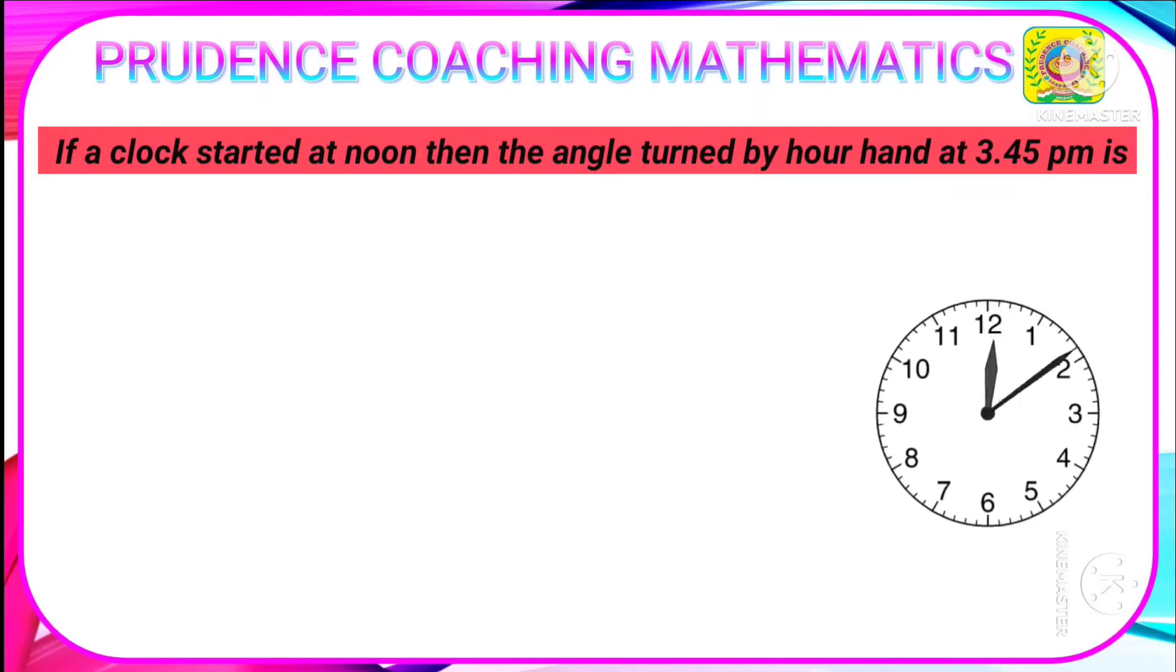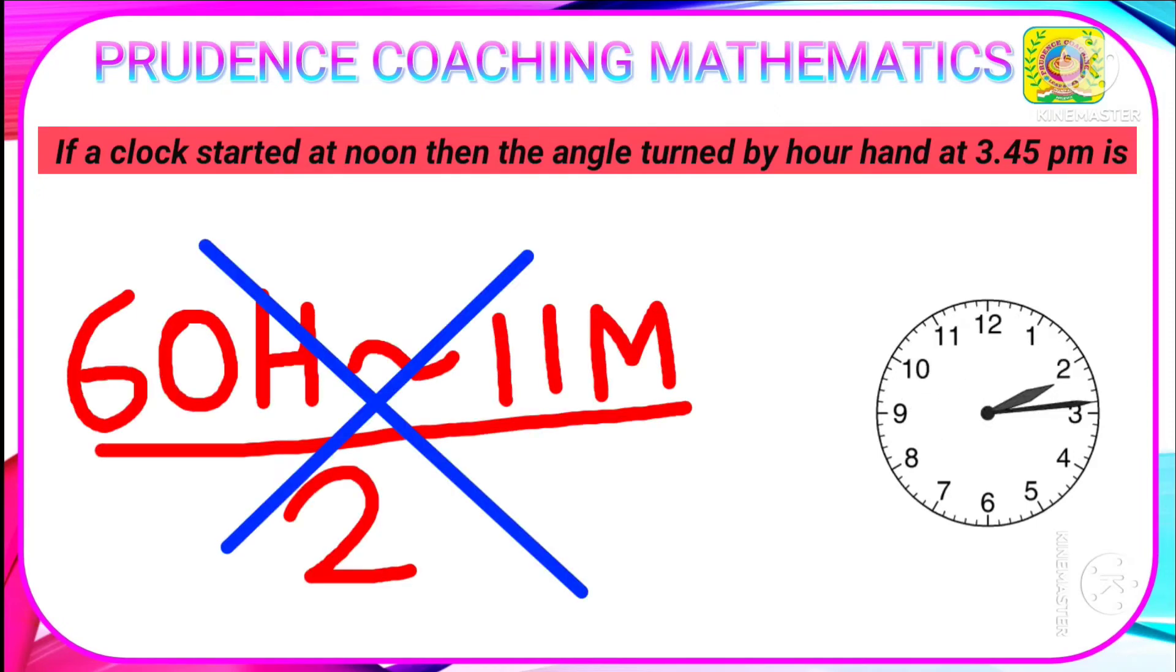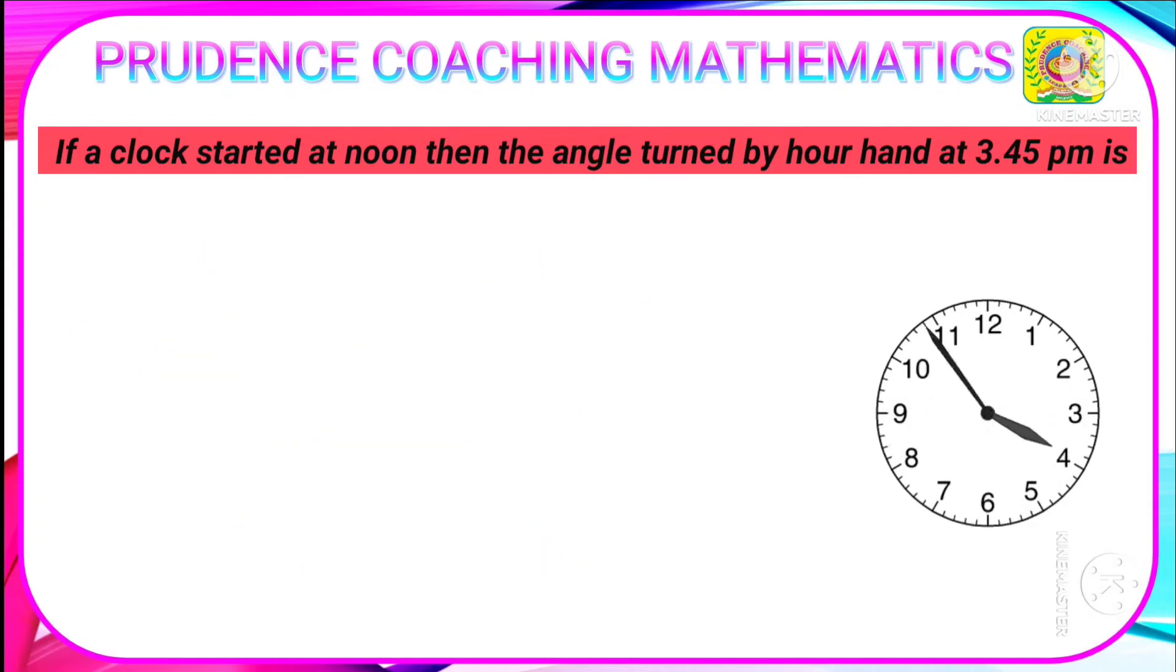If a clock started at noon (noon means 12 PM), then the angle turned by hour hand—not the angle between hour and minute hand. You cannot use the formula theta minus 11M divided by 2. You cannot use this formula here. Turned by hour hand at 3:45 PM.